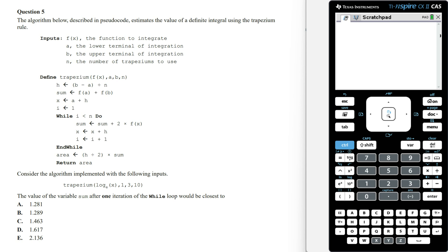In this video I'm going to show you how to answer the 2023 MATHS Methods sample exam 2 question 5. The algorithm below, described in pseudocode, estimates the value of a definite integral using the trapezium rule. Consider the algorithm implemented with the following inputs. The value of the variable sum after one iteration of the while loop would be closest to.